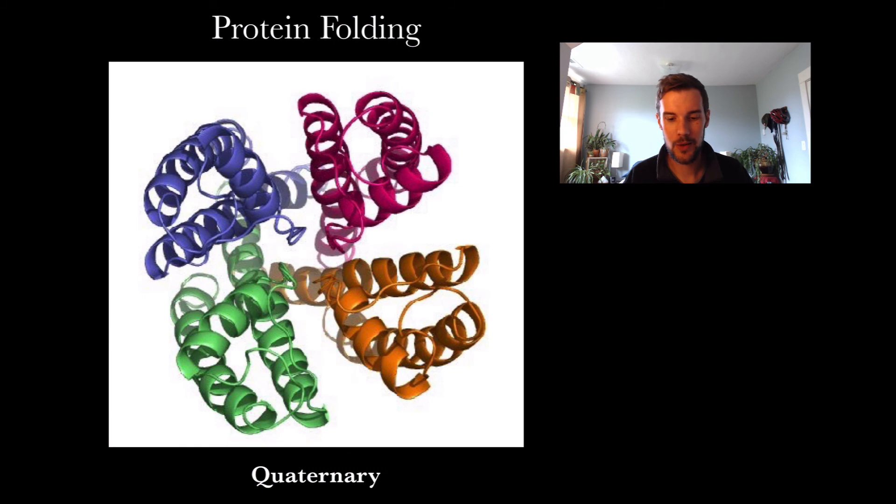Lastly, the quaternary structure is multiple polypeptides together. You can see each one of these colors—orange, green, magenta, purple—those are all different polypeptides, and then they start to come together.